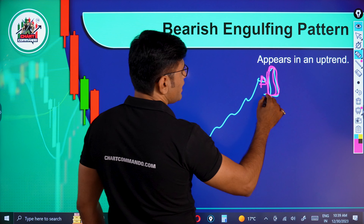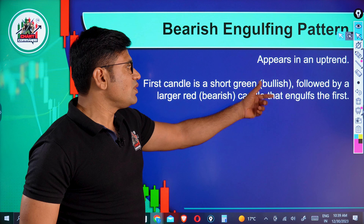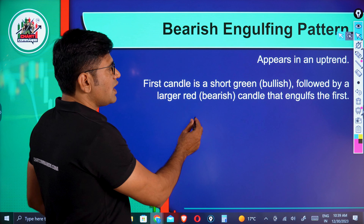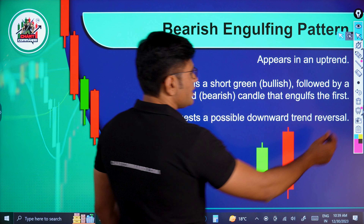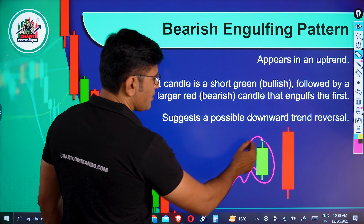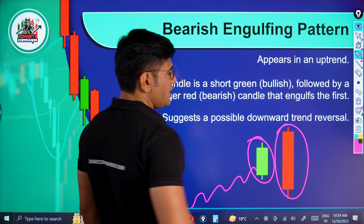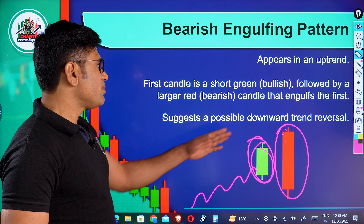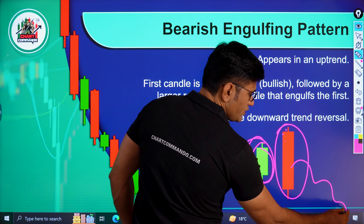There is a red candle. This is a short green bullish candle, and this is a small green bullish candle, and this is a small green candle. This is a red colour, and this is a pattern. The market works consistently. This is a bullish candle, and after that we have a big red candle. This candle will be fully given. This is a bearish engulfing candle, and this will be a possible reversal in the market.